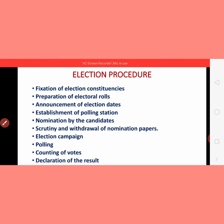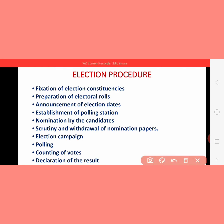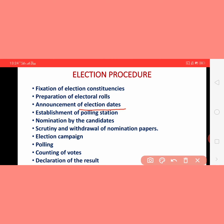When the electoral rolls — means the voting list — are prepared, the Election Commission, with the help of the central government or the state government, makes the announcement of the election dates — on which day elections will be held. If it is Lok Sabha elections, permission is taken from the President and discussed with them. If it is state elections, discussion is held with the Governor, after which the date is decided and announced.